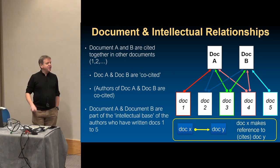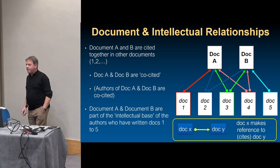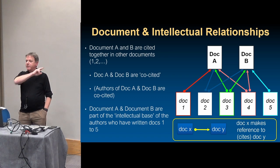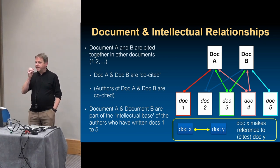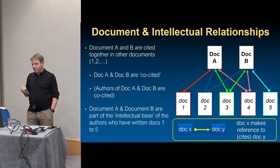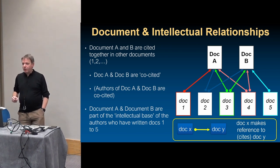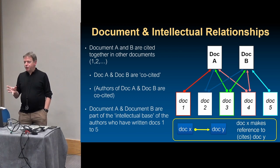To give you a sense of the relationships being created: documents one through five are published this year. We can see that documents two, three, and four all reference two earlier documents, A and B. That tells us those earlier documents are significant to their understanding of the topic. Depending on how many references there are and how close they are, we can pull together clusters of people talking about the same things. There's a 50-year literature on citation complexity, but I won't go into that.